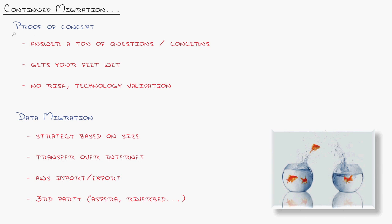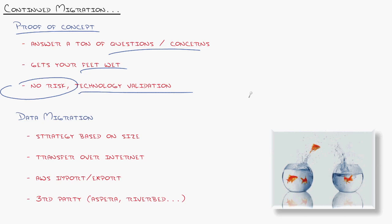Now it's time to do a proof of concept — that just means you're going to move something real into the cloud. By 'real' I mean it could be a personal blog, a test site, or a beta site for your company's application. It just has to be something real that you can prove works, because this is going to answer a ton of questions. It's going to help you learn how to work with Amazon Web Services and get your feet wet with, this is the key, no risk. You don't want to make your company's bread-and-butter applications the ones you're testing in Amazon Web Services — at least from a test perspective. Maybe it is the application, but it's a copy of it. This lets you validate that everything's going to work.